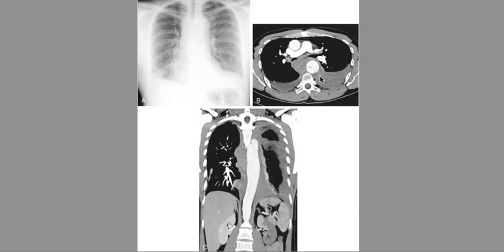Type B dissections do not involve the ascending aorta or the aortic arch, and typically arise distal to the left subclavian artery. We have now reviewed both the Stanford and DeBakey classifications, and examined imaging characteristics of mediastinal widening representing an aortic dissection.